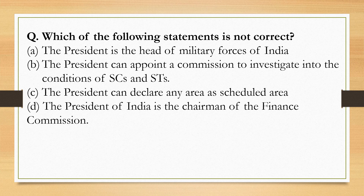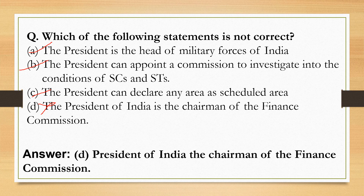Which of the following statements is not correct? The President is the head of military forces — correct. The President can appoint a commission to investigate conditions of SCs and STs — correct. The President can declare any area as a scheduled area — correct. The President of India is the chairman of the Finance Commission — this is NOT correct. So the correct option is Option D.